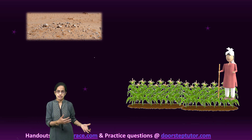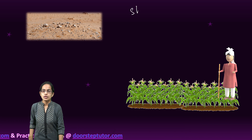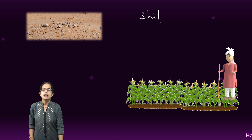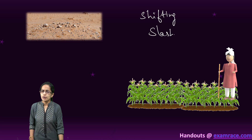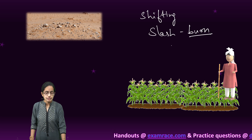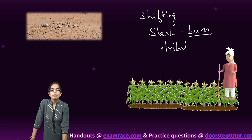Till that time, we switch to the next land parcel and start our activities there. Now this shifting cultivation is also known as slash and burn cultivation. As the name suggests, you would burn the first land parcel and move to the next land parcels.